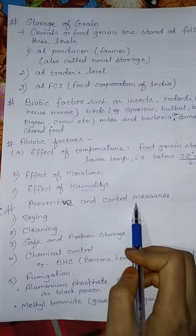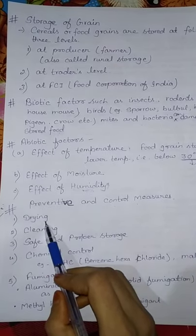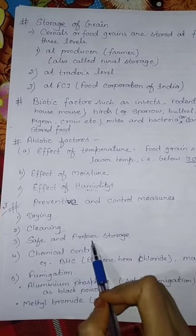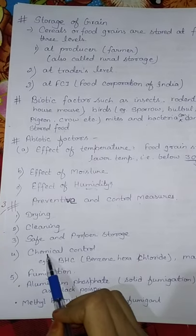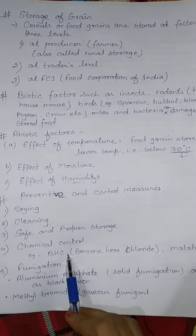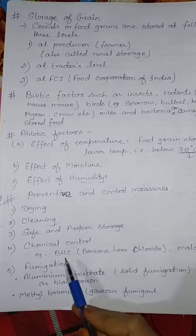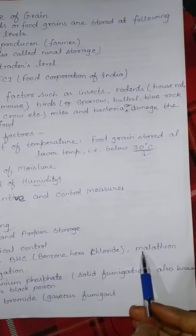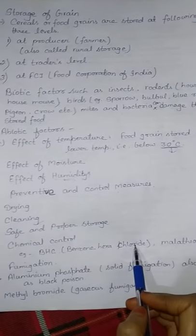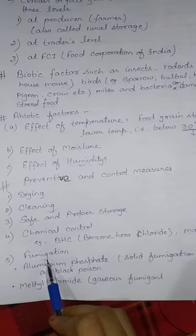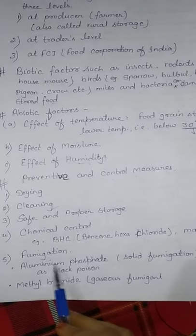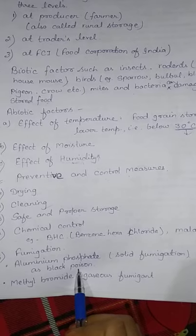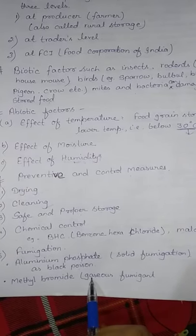Preventive and control measures include first drying the crop brought from the field, then cleaning, safe and proper storage, and chemical control. BHC is commonly used, like the medicine we use in drums at home for storing wheat. BHC stands for Benzene Hexachloride, and Malathion are mostly used. Fumigation is also done for smell control. Aluminum phosphate is a solid fumigation agent, also known as blood poison. Methyl bromide is a gaseous fumigant.